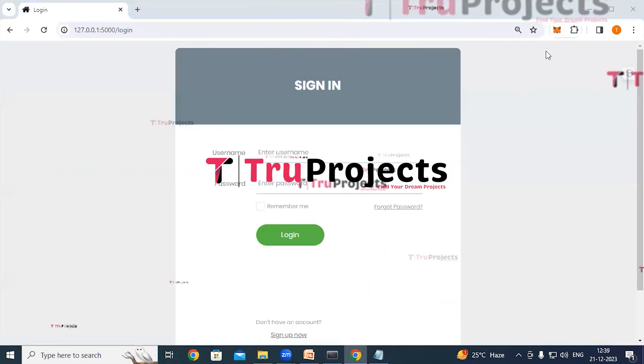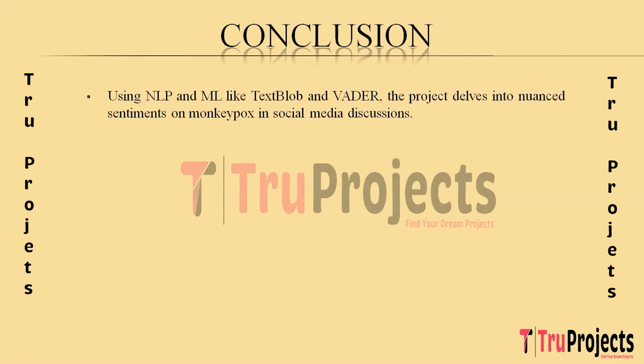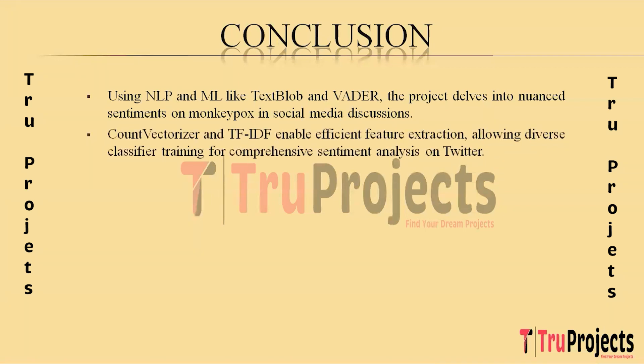In conclusion, the project successfully employed a variety of natural language processing and machine learning techniques, including TextBlob and VADER sentiment analysis, alongside algorithms such as Logistic Regression, SVM, Random Forest, MLP, Naive Bayes, XGBoost, and KNN. This comprehensive approach provided nuanced insights into public sentiments on the monkeypox outbreak. The utilization of both Count Vectorizer and TF-IDF Vectorizer facilitated effective feature extraction, converting raw text into numerical format and enabling thorough exploration of machine learning model performance in classifying Twitter sentiments.